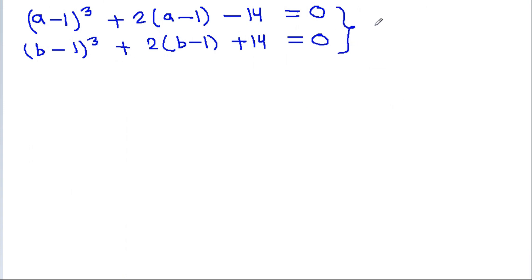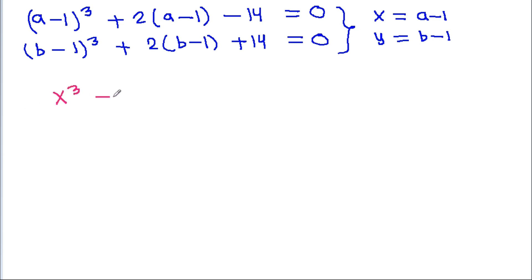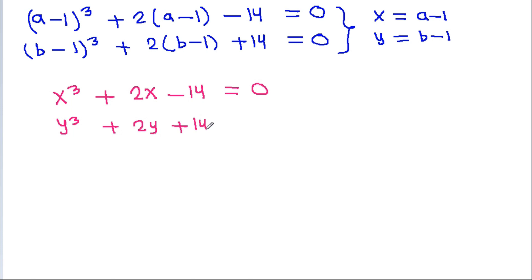Now, if we let x equal a minus 1 and y equal b minus 1, then the first equation becomes x cubed plus 2x minus 14 equals 0, and the second equation becomes y cubed plus 2y plus 14 equals 0.